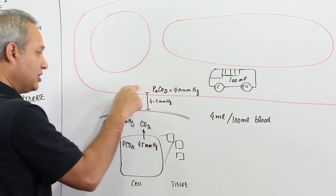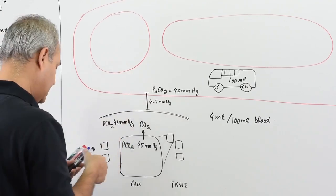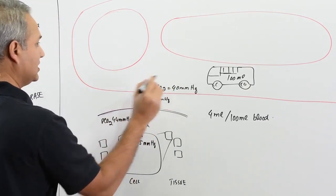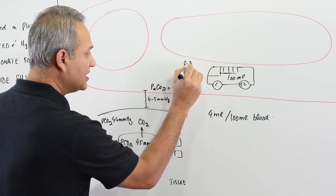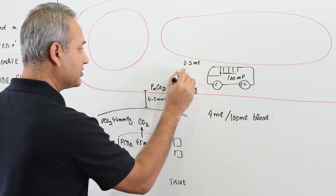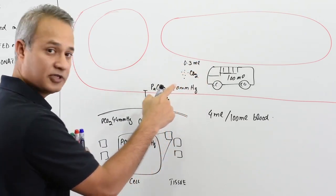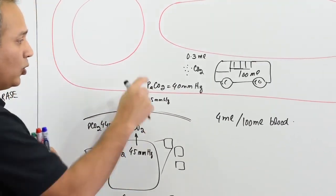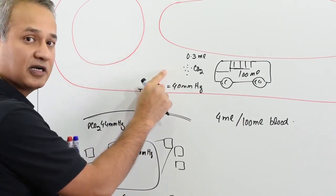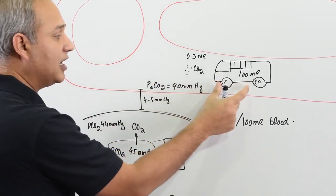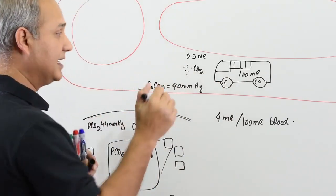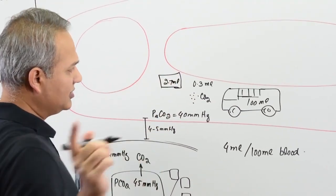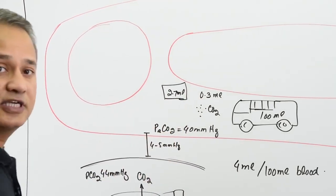When CO2 reaches the plasma, about 0.3 milliliters becomes dissolved in the plasma — this is the first form: dissolved in plasma. If you measure the plasma CO2 in 100 mL, the total dissolved CO2 is 2.7 milliliters.